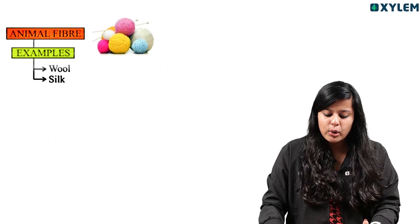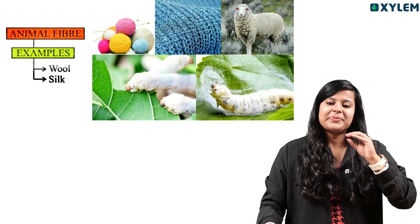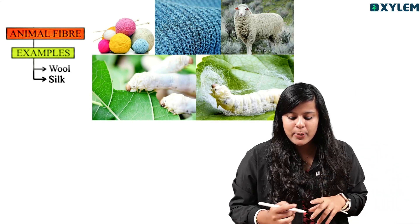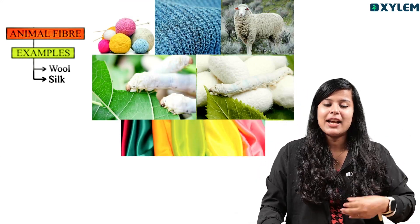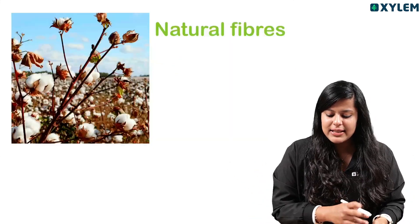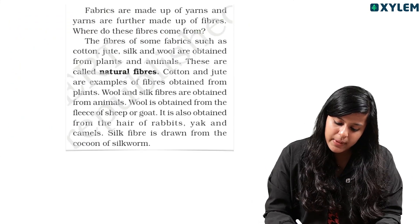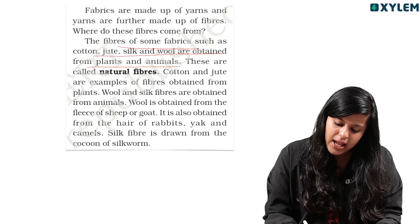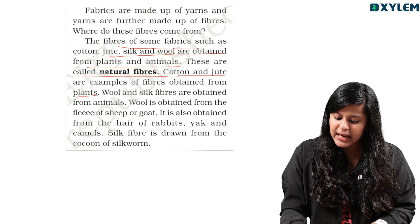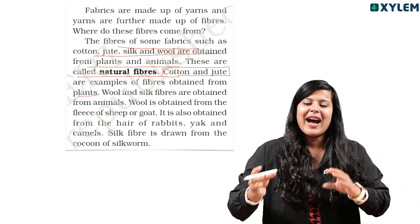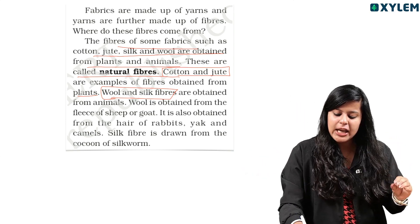Animal fiber includes silk. The natural fibers include fabrics such as cotton, jute, silk, and wool, which are obtained from plants and animals — these are called natural fibers. Cotton and jute are examples of fibers obtained from plants. Wool and silk are examples of animal fibers.